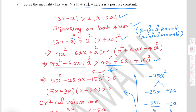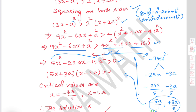You get 5x squared minus 22ax minus 15a squared is greater than 0. Factorize this quadratic: 5 times 15a squared gives negative 75a squared, and the factors are minus 25a and plus 3a, giving minus 22a as the x coefficient. The product of factors gives (5x plus 3a)(x minus 5a) is greater than 0.